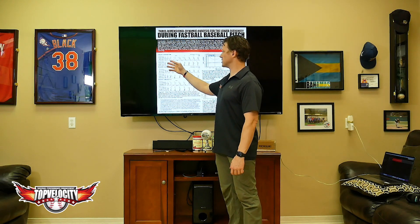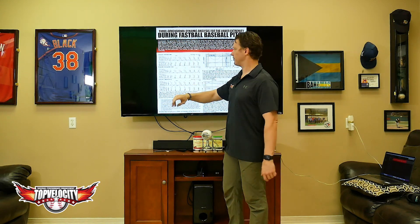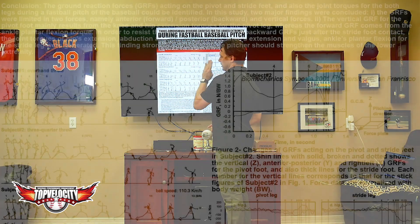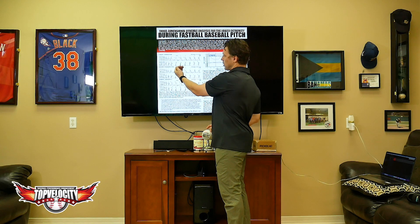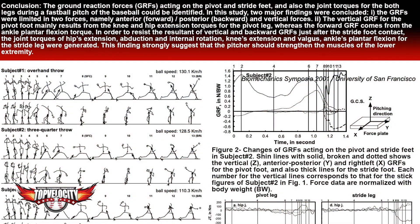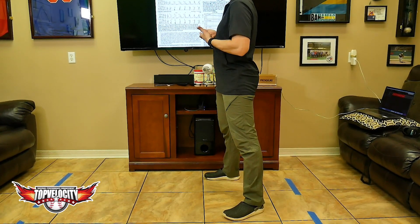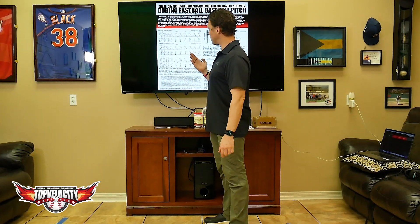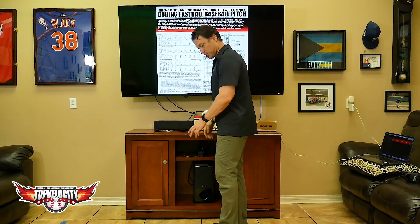Basically what they found is the forces coming from the drive legs are really specific to the arm slot. If we look here at the pitcher coming at us, we can see the arrow — in an overhand throw, between these two points at arm cocking, the forces are going up or in a straight position. In the three-quarters throw it starts to drop slightly, and in the sidearm throw it starts to go more this way.